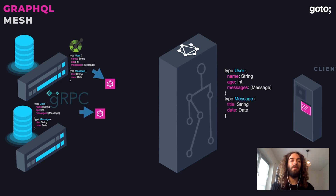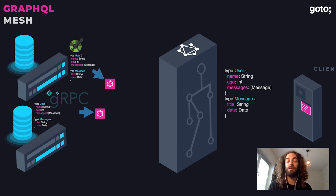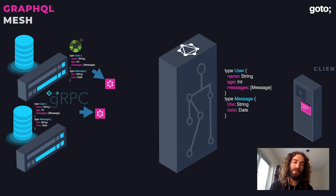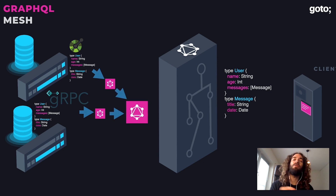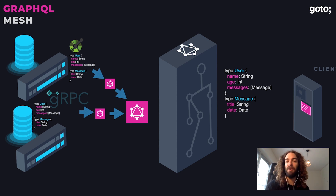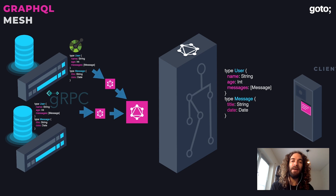Can we take those gRPC services or SOAP services that exist, generate from them and from whatever we currently know a GraphQL schema? And maybe in the second phase, take all those schemas and merge them into one GraphQL schema — one graph — without making them do any change, just relying on the existing technologies they already have.